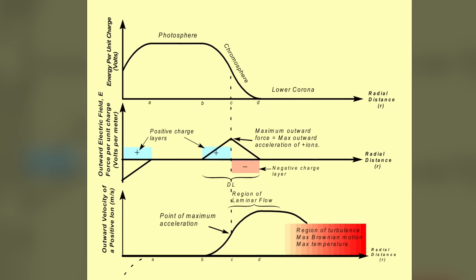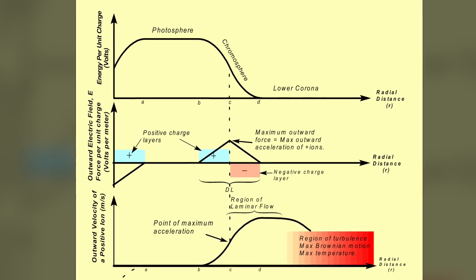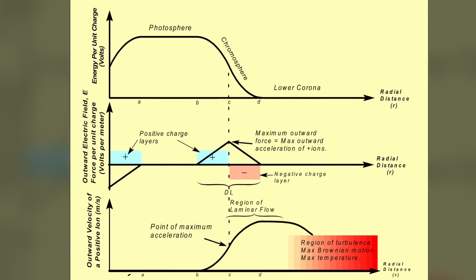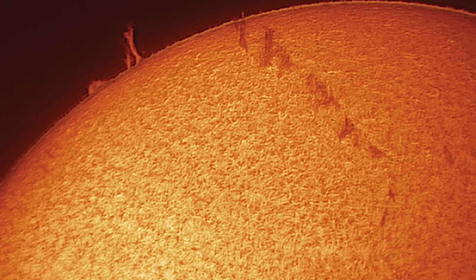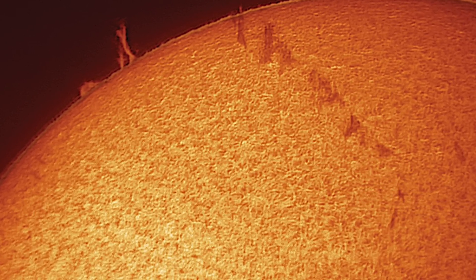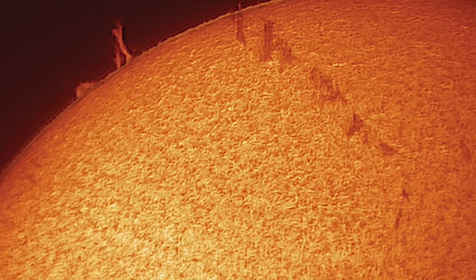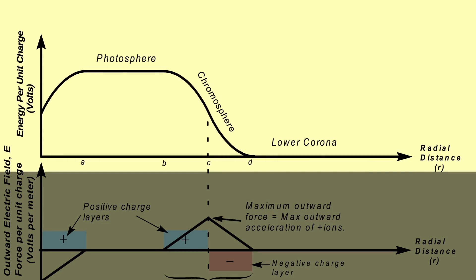The essence of the electric sun is shown in this image. In this diagram, the horizontal axis of each plot is the radial distance outward from a point just below the sun's photospheric surface. That surface is opaque. We can't see down through it. That's why some people think that is a surface.